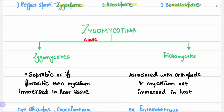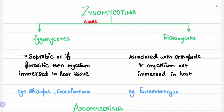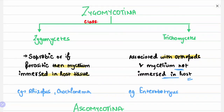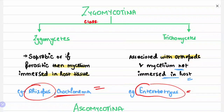Zygomycotina is further divided into two classes: Zygomycetes and Trichomycetes. Zygomycetes are saprobic or, if parasitic, the mycelium is immersed in the host tissue. Trichomycetes are associated with arthropods, which are shelled organisms in the animal kingdom, and the mycelium is not immersed in the host. Examples: Zygomycetes — Rhizopus and Cokeromyces; Trichomycetes — Enterobryus.